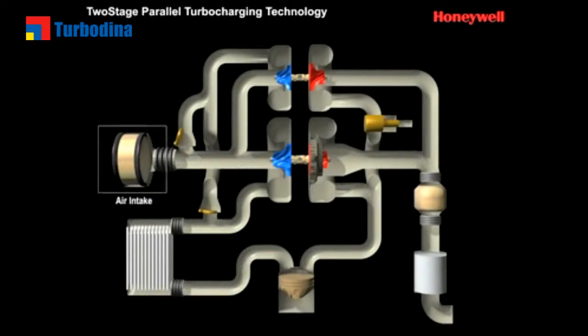In a parallel two-stage system, two turbos work sequentially, normally within a V6 engine block.